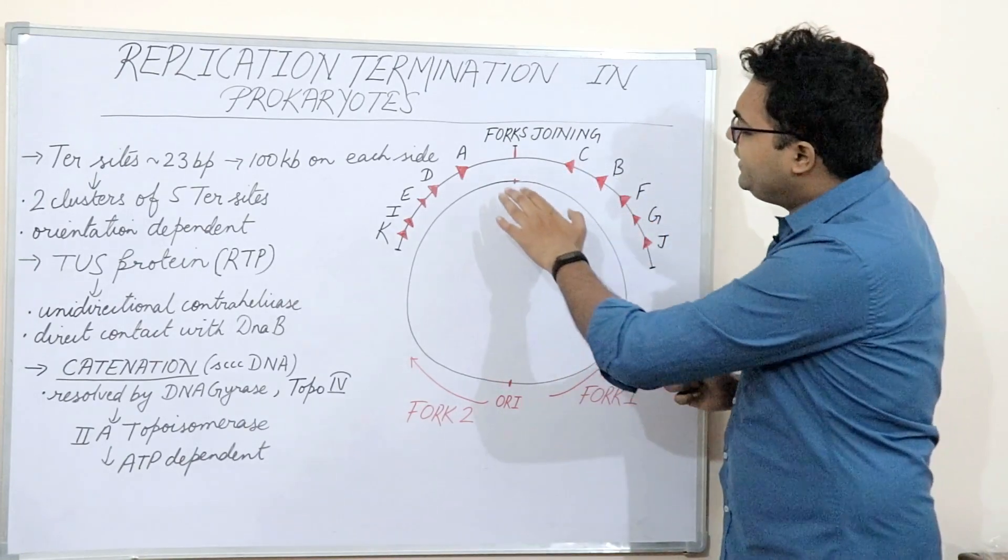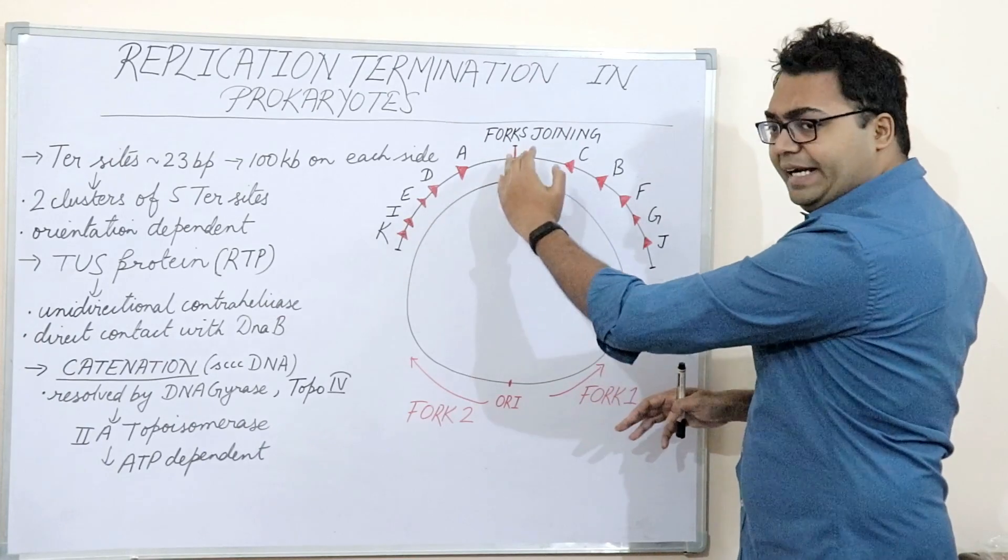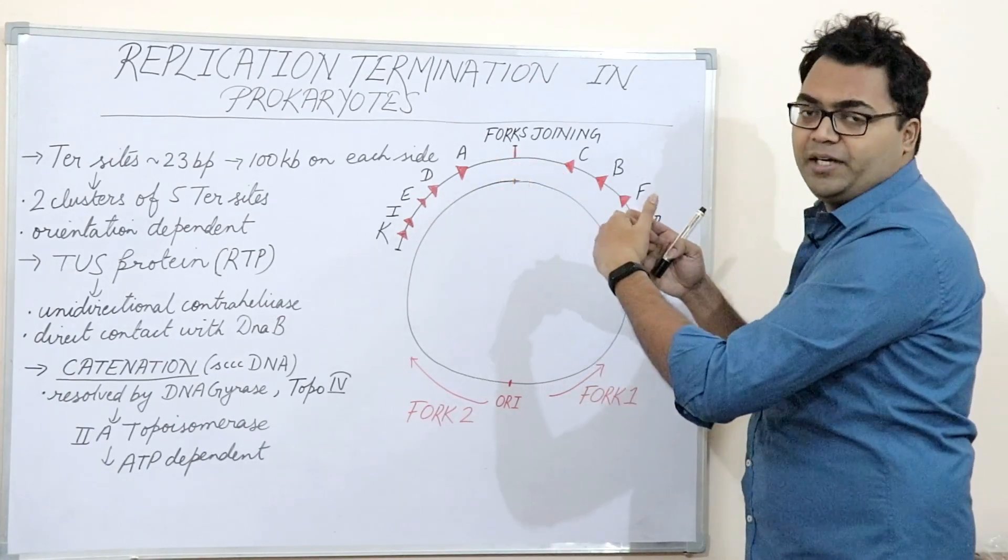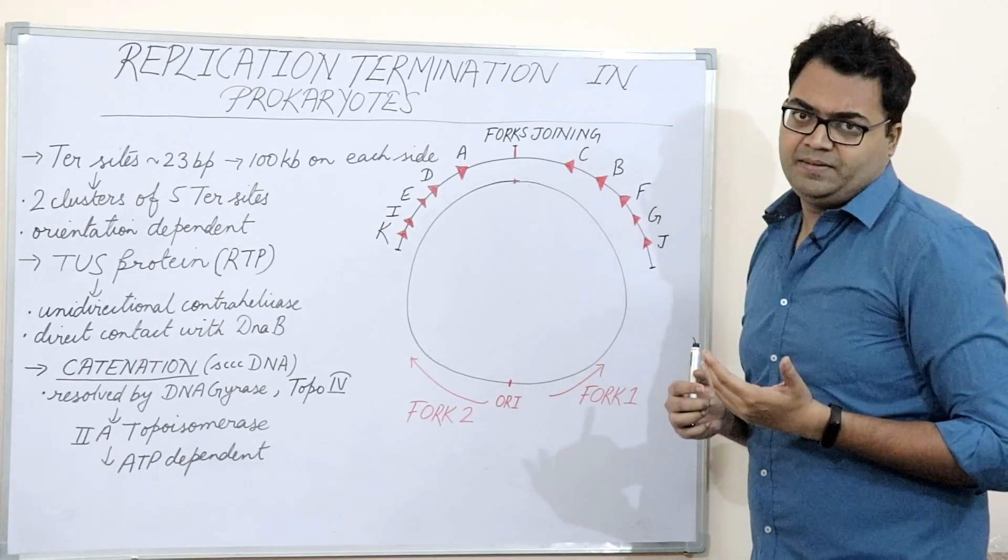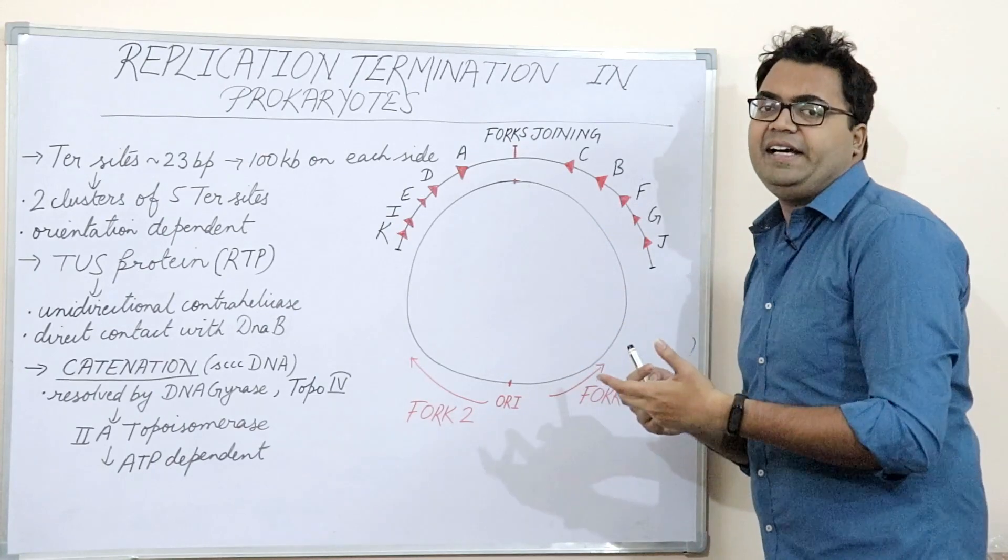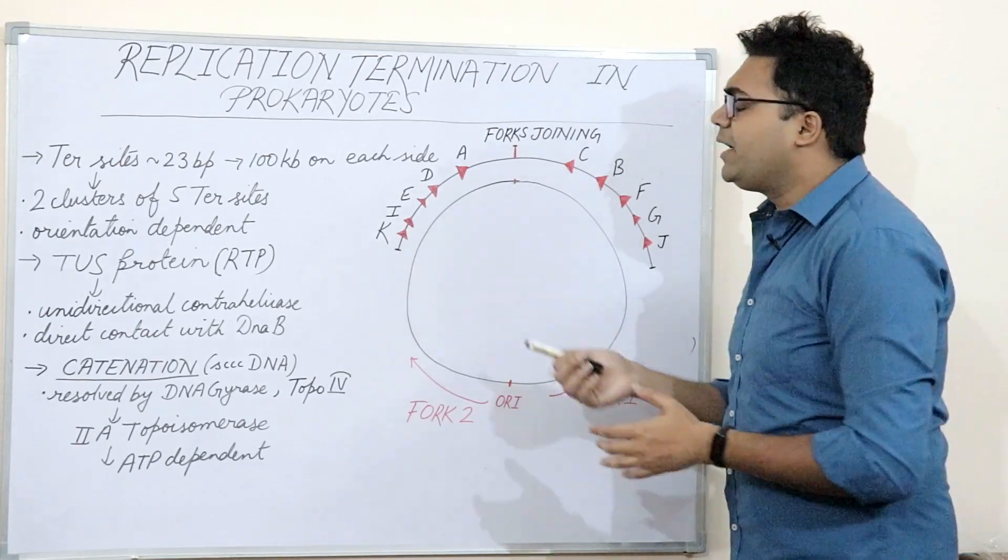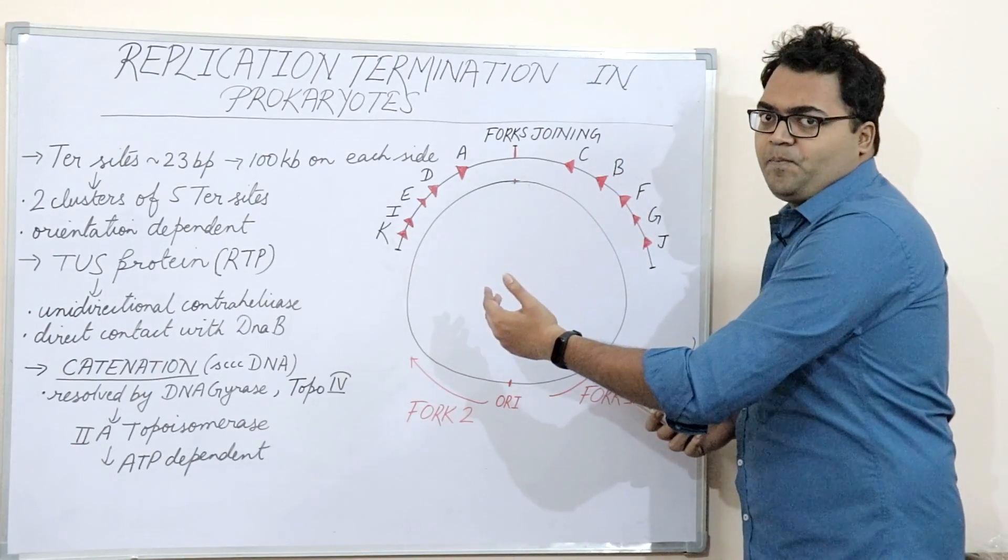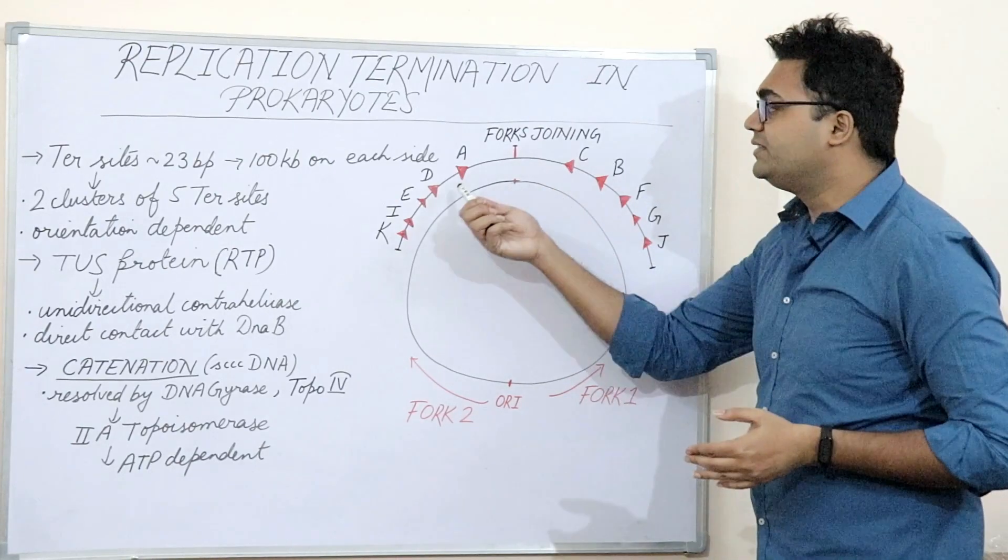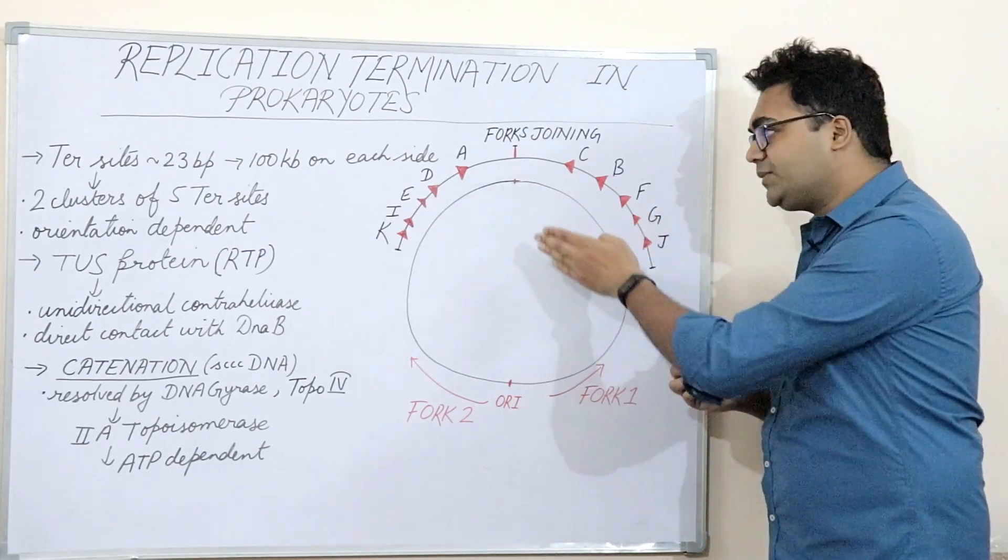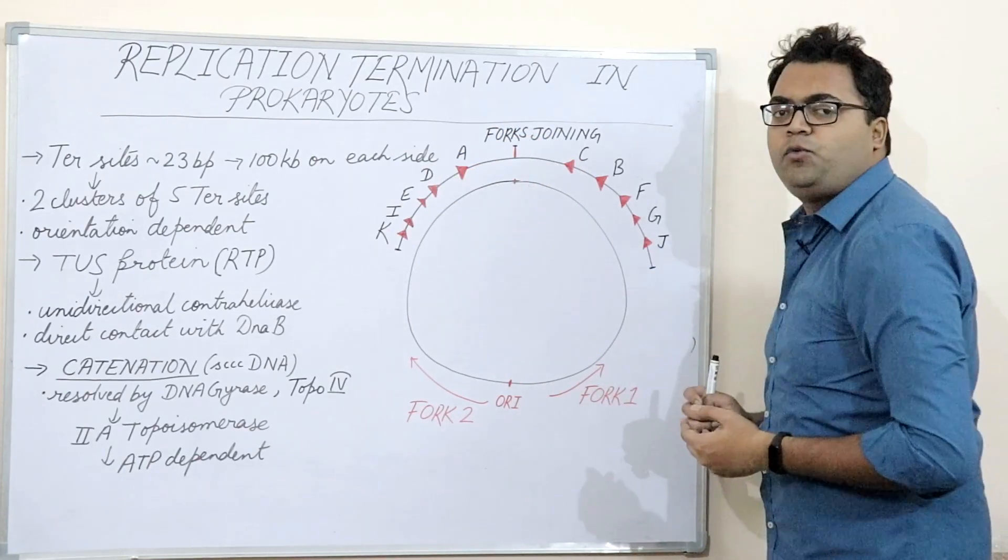But when replication fork 1 reaches A, D, E, I, K, see the direction of these sites and the direction of the replication fork—they are counterwise or you can say they are just the opposite in direction. They counter each other in direction. So these specific five termination sites become non-permissible for replication fork 1 traversal. It cannot let it traverse through these. It will prohibit, it will prevent its movement through these sites thereby preventing or seizing the movement of replication fork 1.